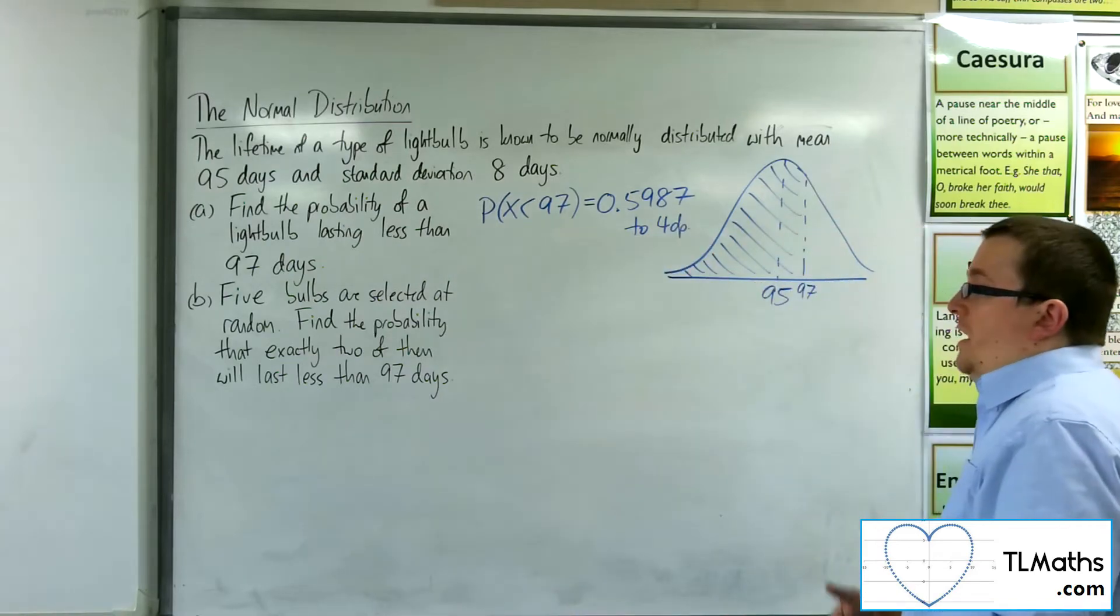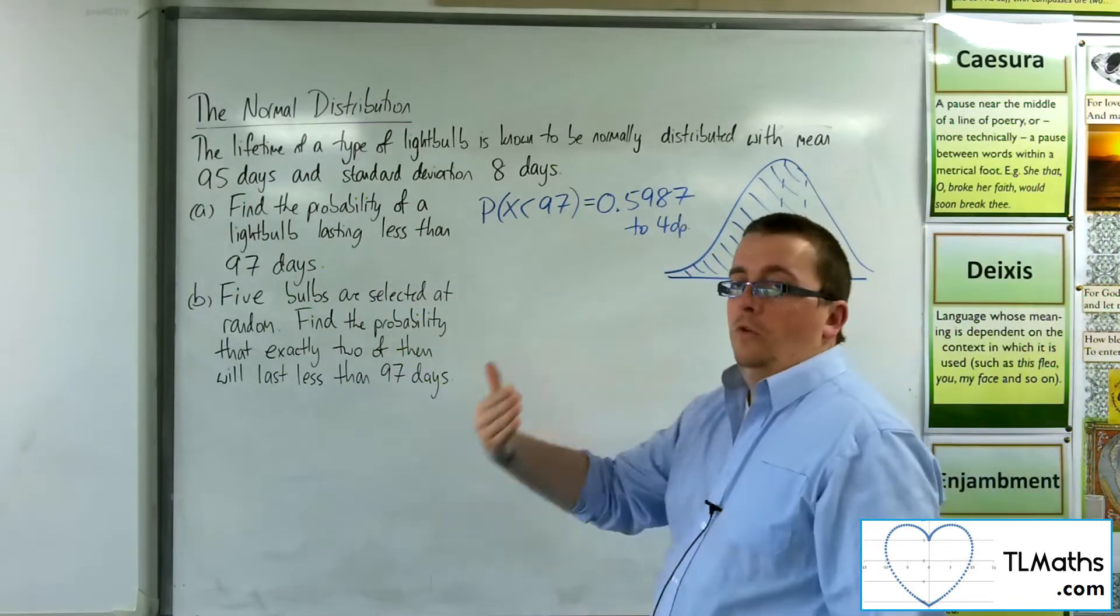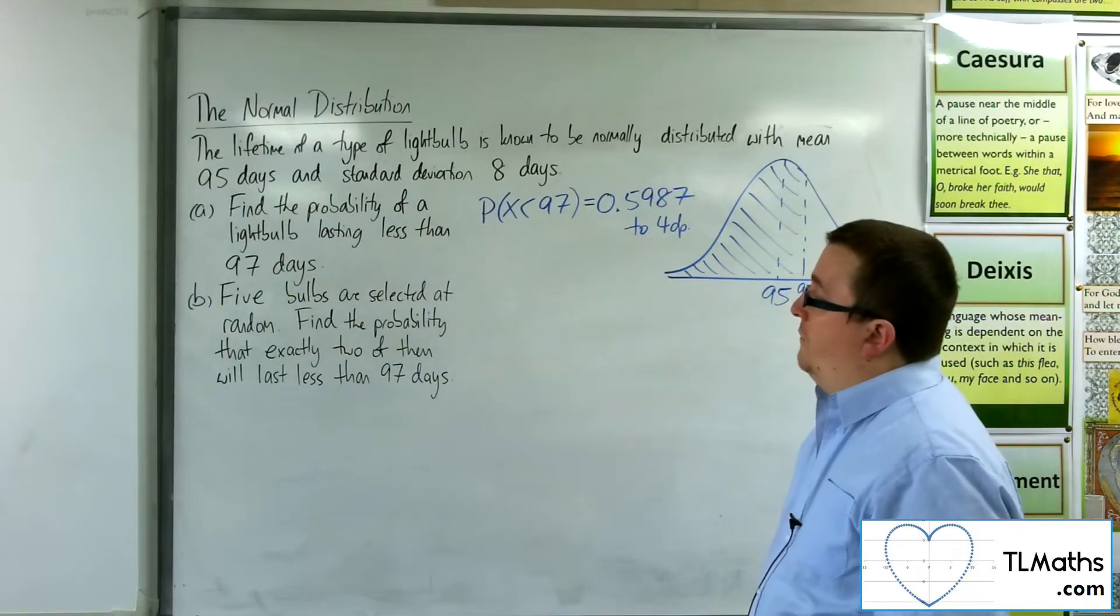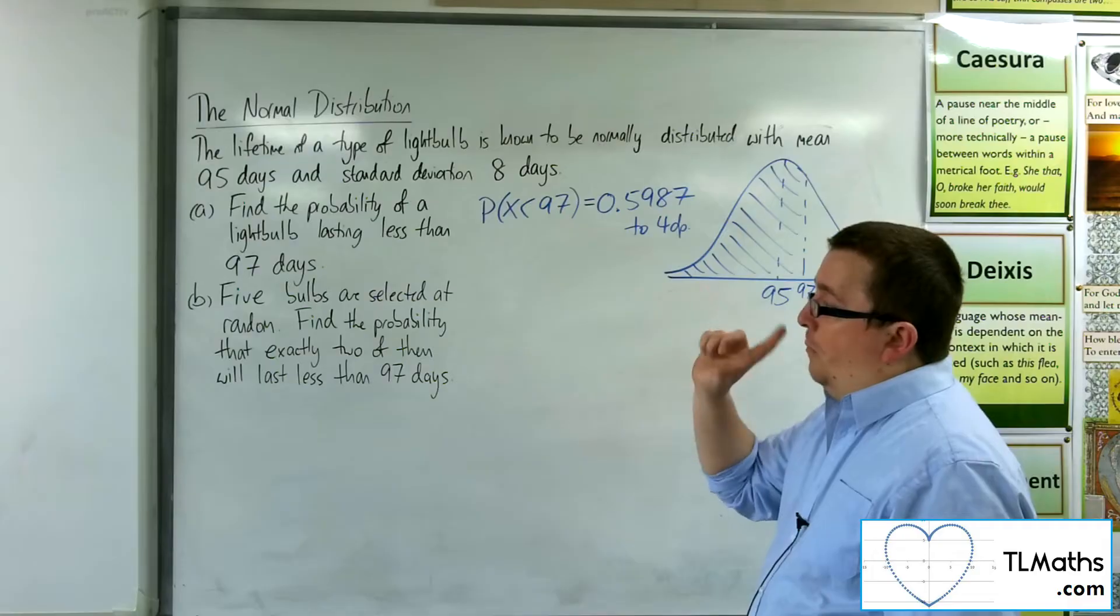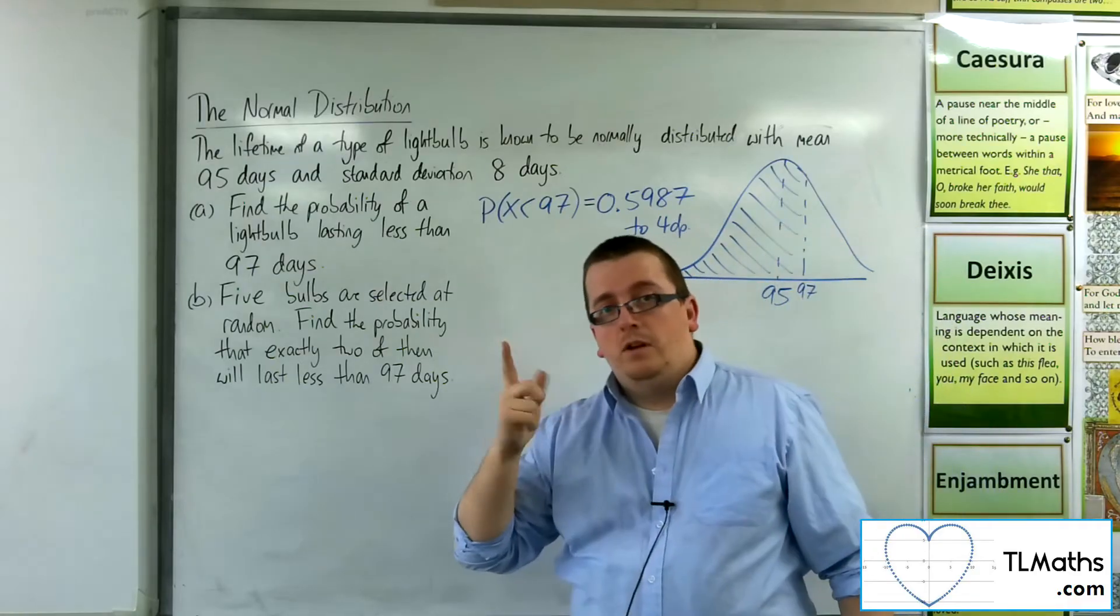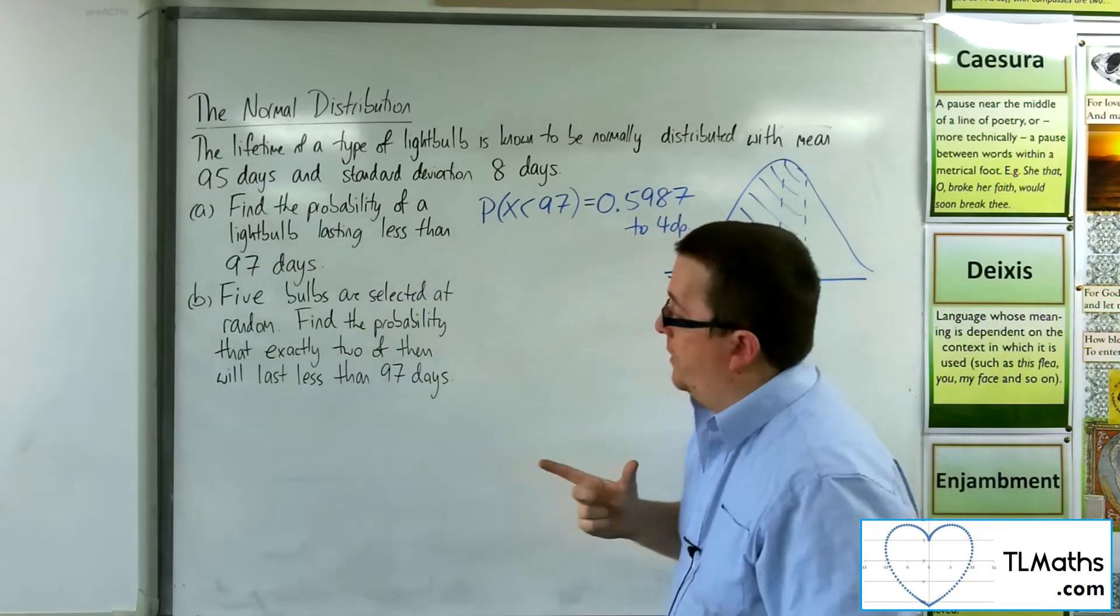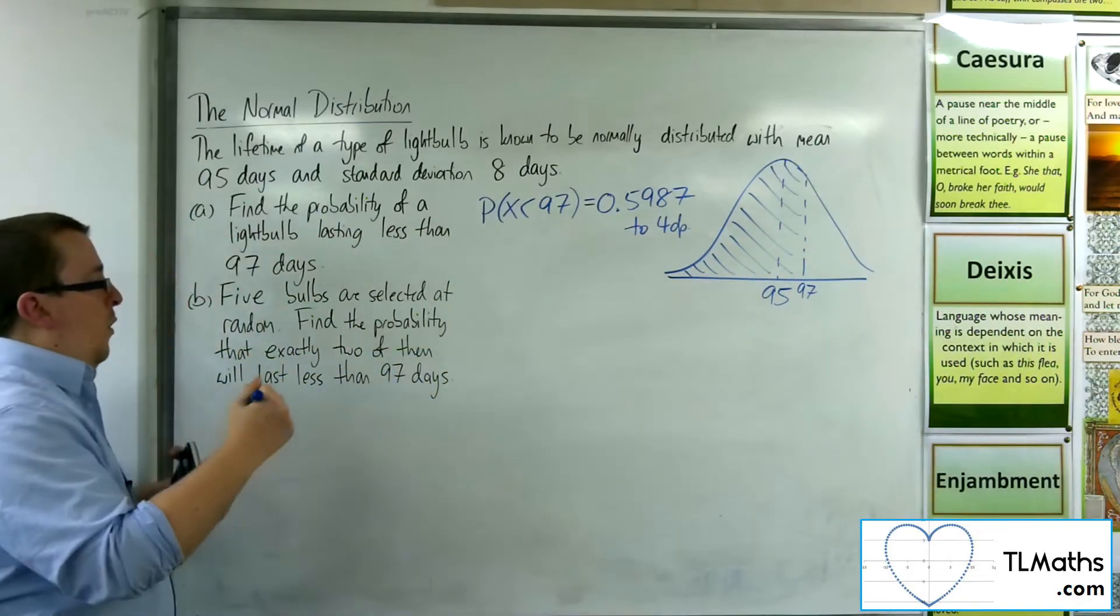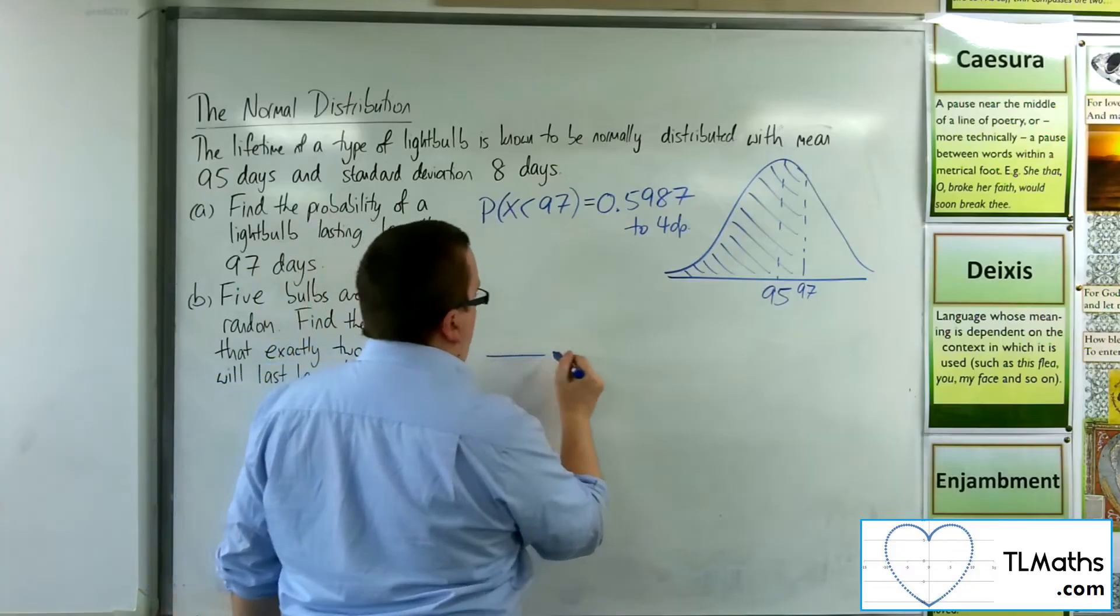The probability as I select these bulbs will remain the same. So a binomial distribution appears to be valid. We've also got only the two options. We've got less than 97 or more than 97. So I want a binomial probability here.